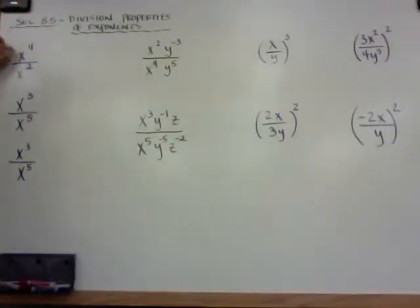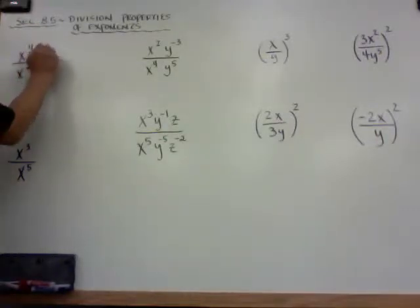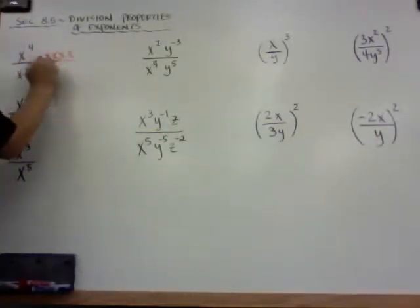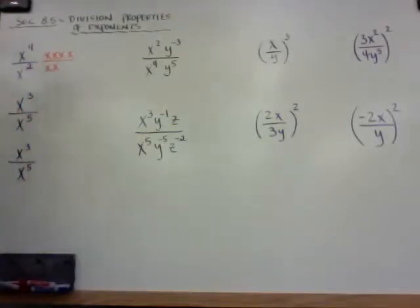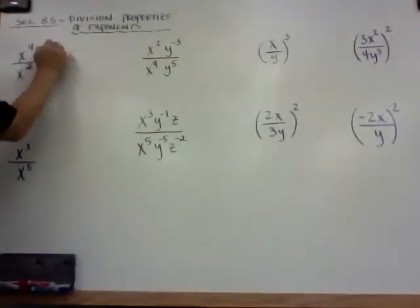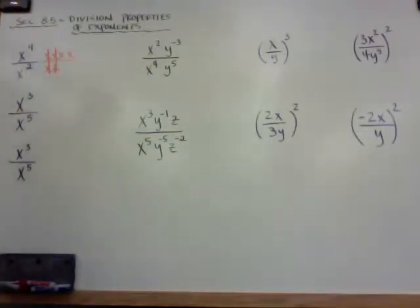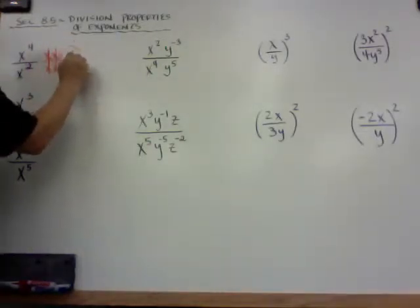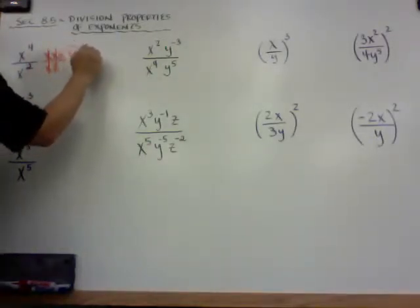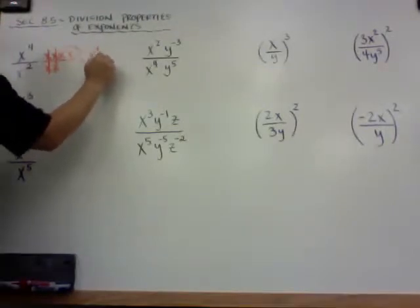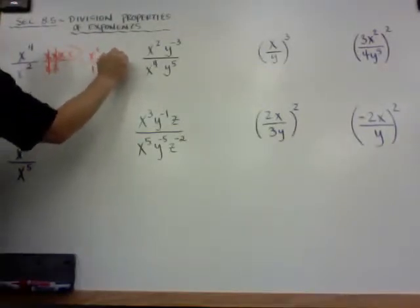If I have x to the fourth divided by x squared, the long way of doing it is to write it out four times and then over x squared, which is x times x, two times. Anything divided by itself cancels out because it becomes one. And if you notice, I have two x's on the top, so my answer would be x squared over one, or just x squared.